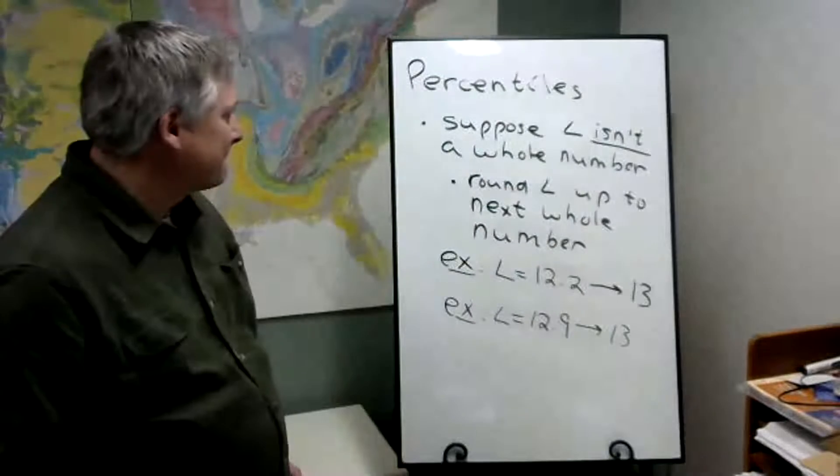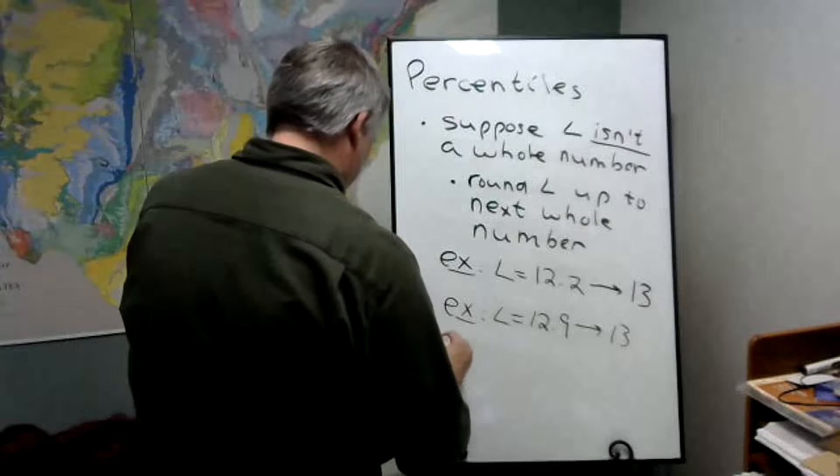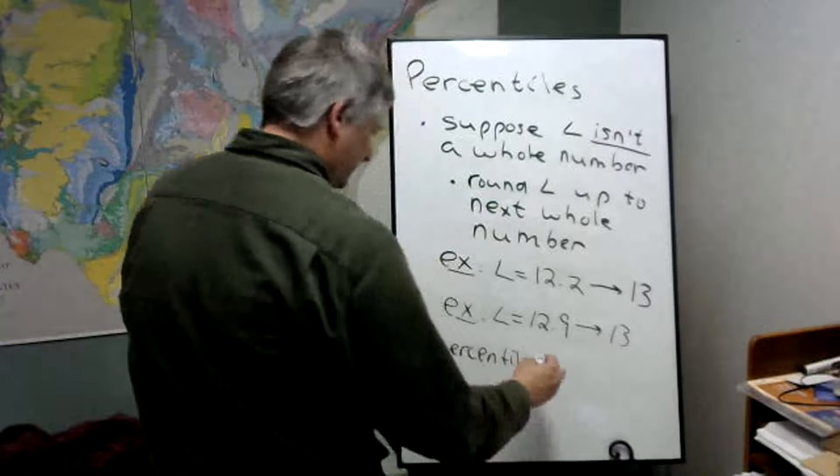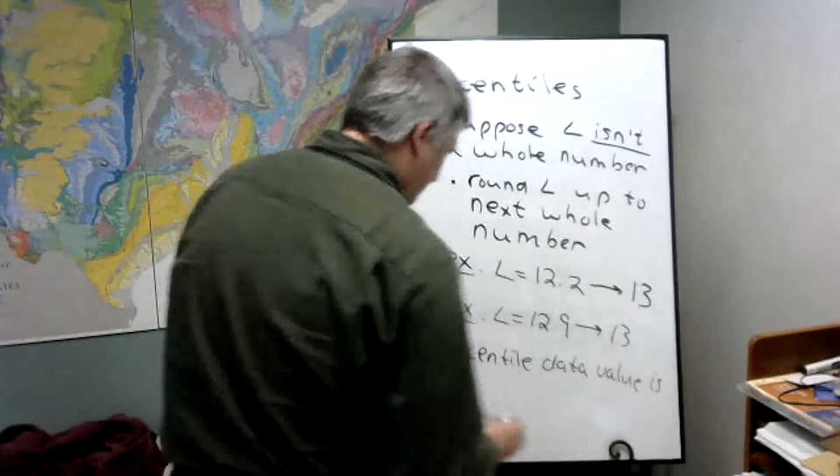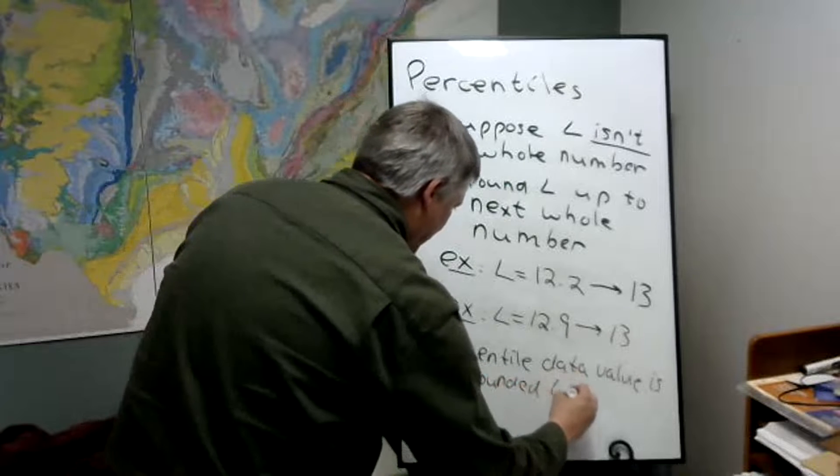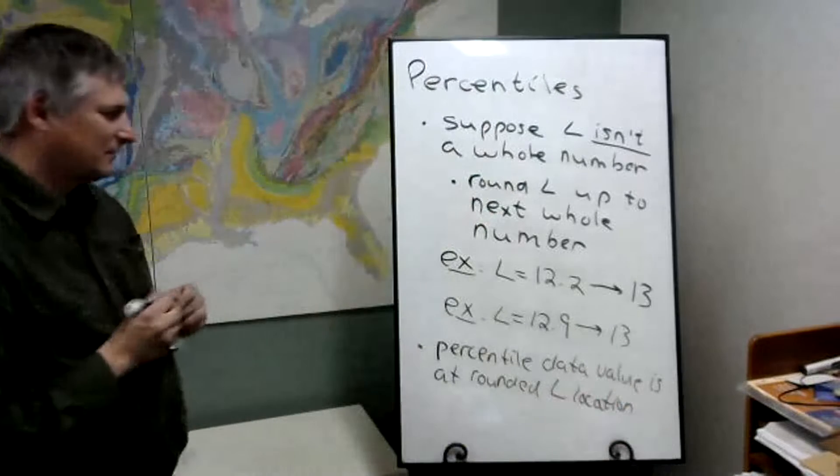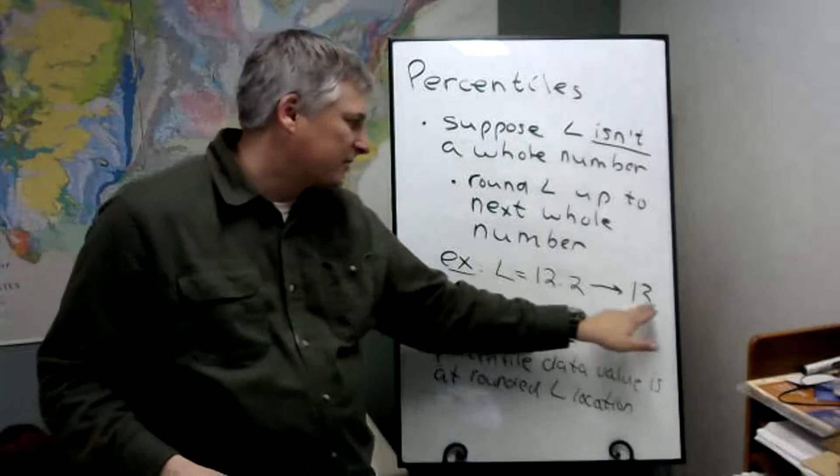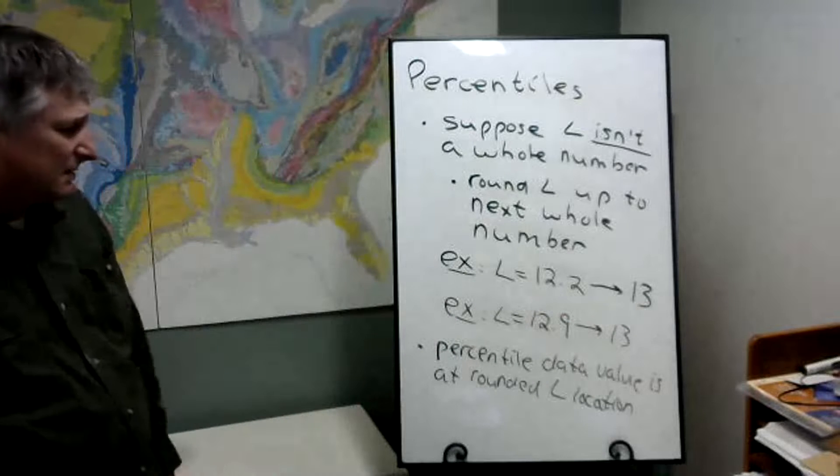And the percentile will be at this new location, so it'll be at the rounded L location. So in this case, whatever percentile we were looking for here, we would look to the 13th data value for that percentile's location. So that's what we're going to do.